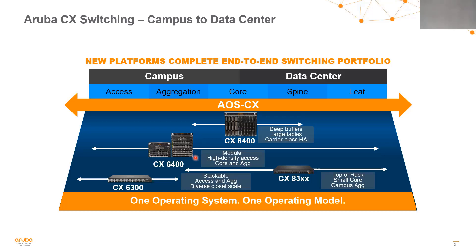Today I'm going to dive a little bit deeper into our highly available CX 8400. This is our large core switch positioned both as a campus core and as a data center core switch. This switch has deep buffers, large tables, and carrier-class high availability. Everything in the Aruba CX switching portfolio truly is one operating system and one operating model from end to end — it's the AOS-CX operating model.